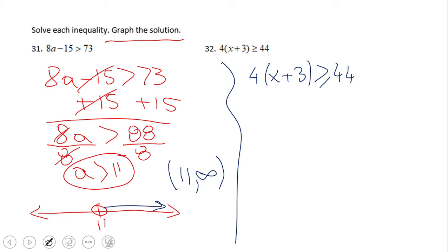Now let's take a look at number 32. Problem 32 can be done in two ways. Probably most of you will do the distributive property, which will be good. I'll approach that in a different way. I'll divide by four, and obviously the next step will be subtract three.